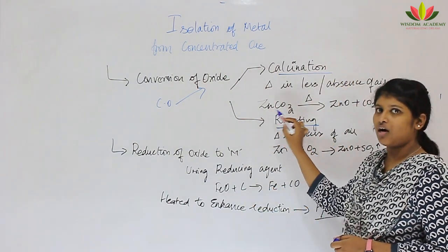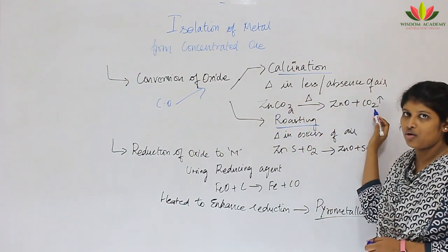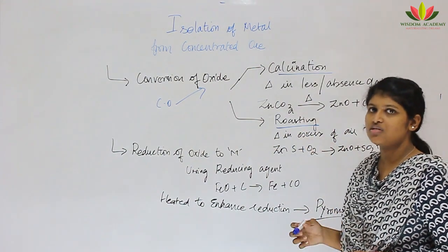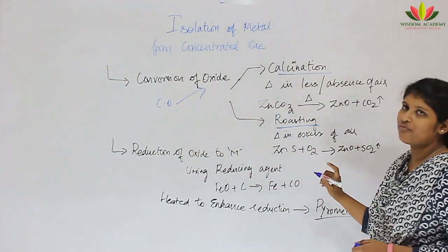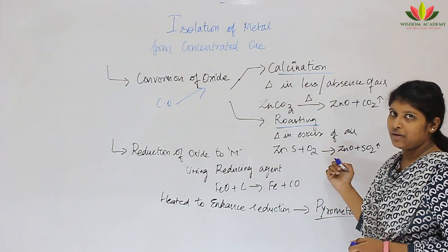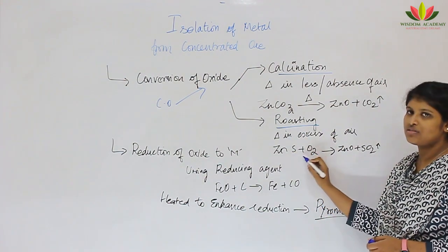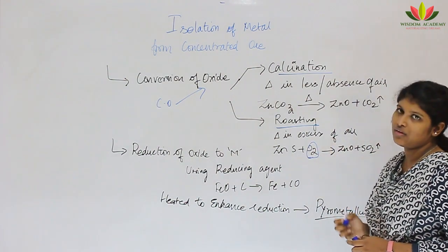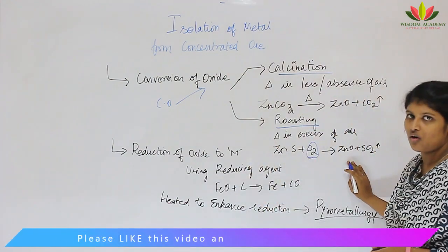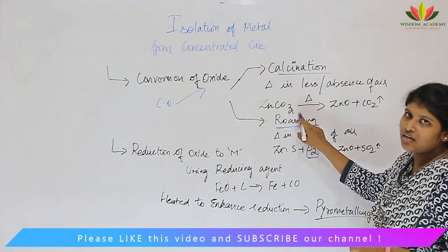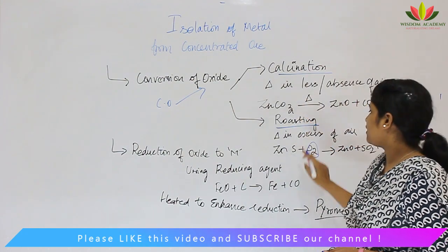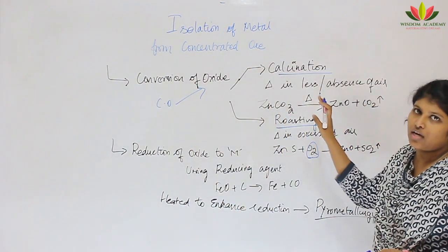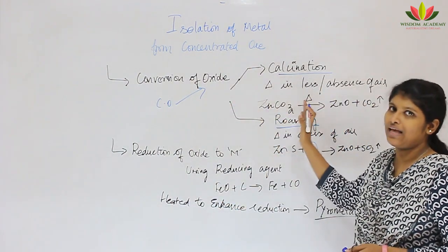In calcination, we take carbonate ore, heat it, carbon dioxide is evolved out, and we get zinc oxide — the metallic oxide. In roasting, heating is done in excess of air. If we have sulphide, sulphur cannot be separated as-is, so we convert it to sulphur oxide by heating in the presence of oxygen — we also get zinc oxide. So for carbonate, we heat in absence of air (calcination); for sulphide, in presence of air (roasting).